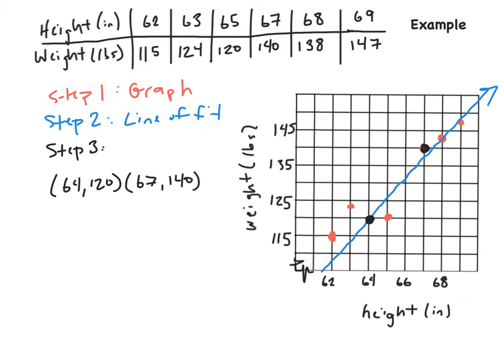Now, remember, we have to find the slope. Find the slope is the change of y, which is 140 minus 120 over 67 minus 64. So, 140 minus 120 is 20. 67 minus 64 is 3. Since it's a slope, I'm just going to leave it as a fraction, just going to leave it as 20 over 3. So that is going to equal our m.